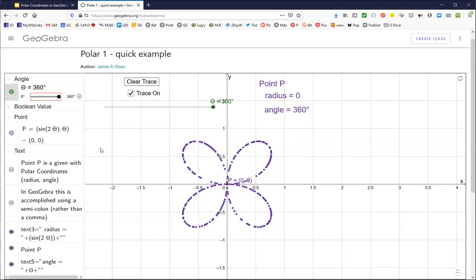So I will put the link to this document, this GeoGebra file in the description, and you can fiddle with this. Let's change this coefficient to a three. Let's clear the trace, and let's see what happens this time.